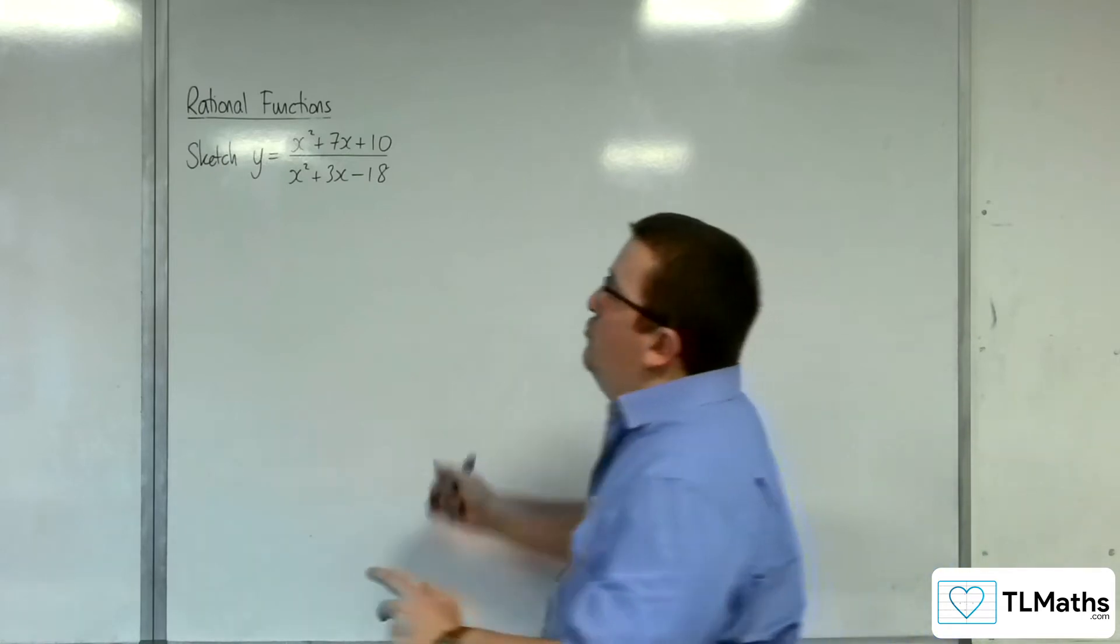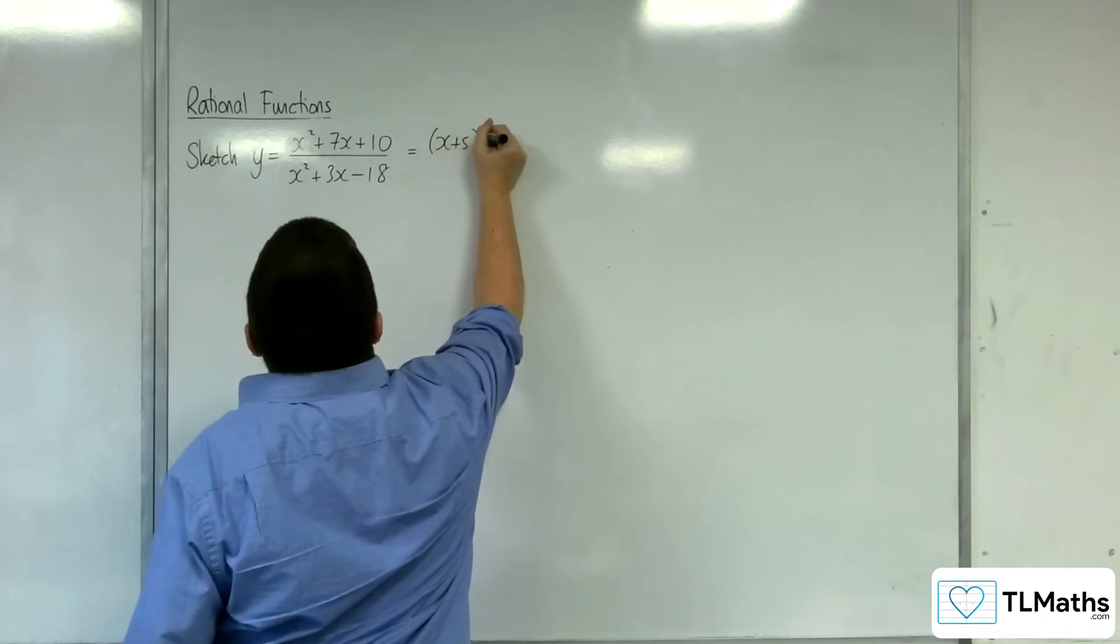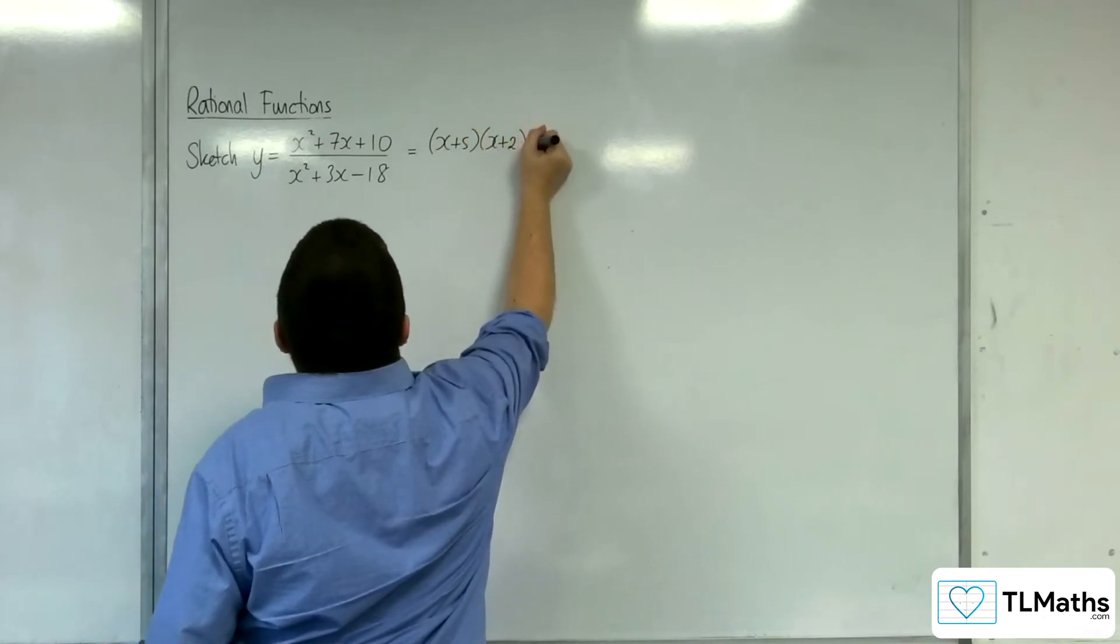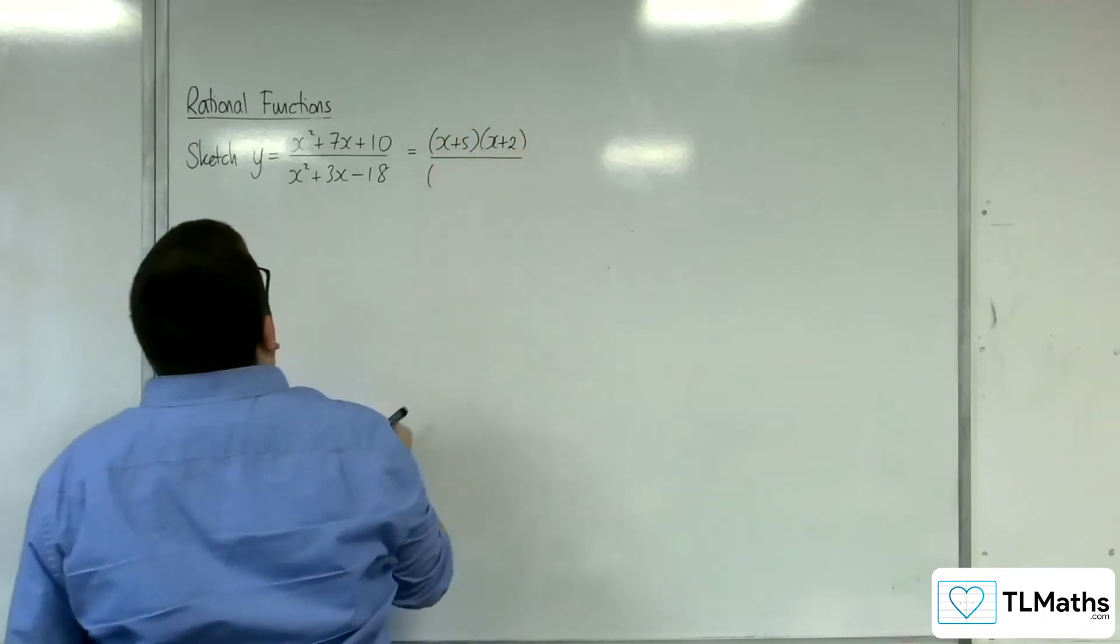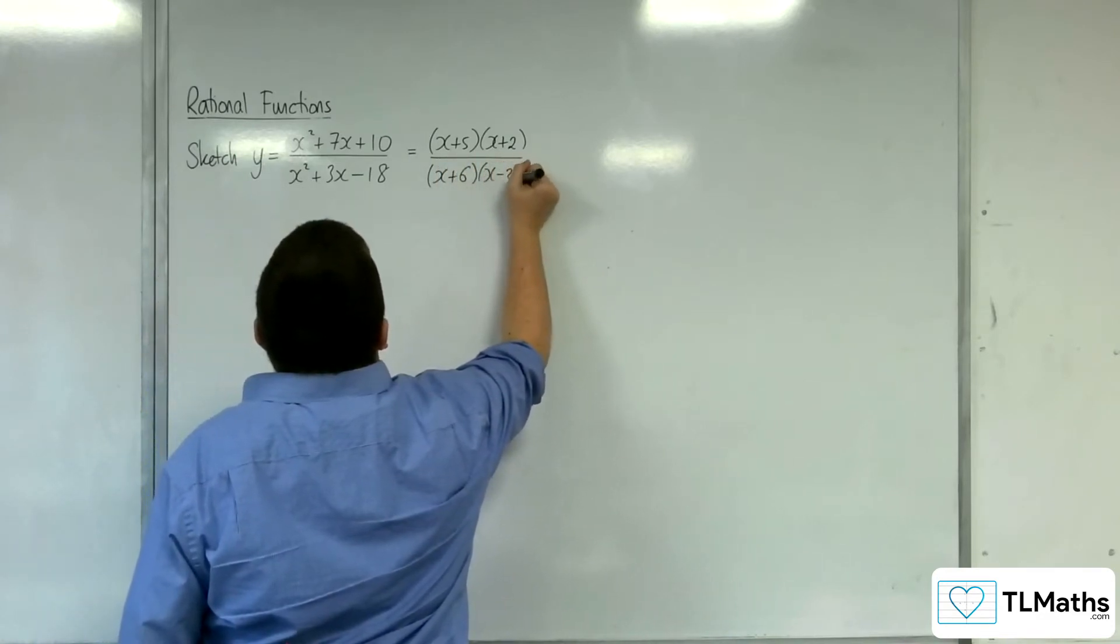So let's see if we can factorise the numerator and denominator first. So that would be x plus 5, x plus 2. And in the denominator, we would have x plus 6, x minus 3.